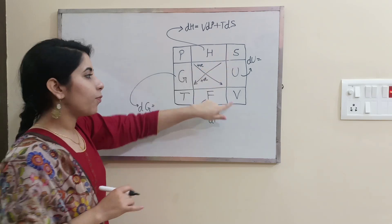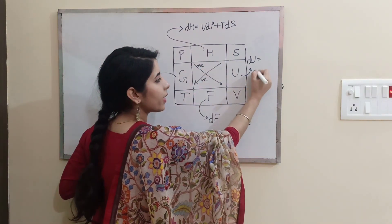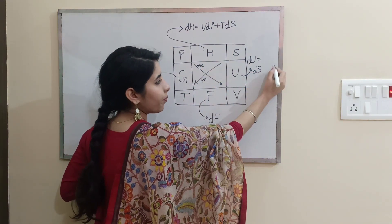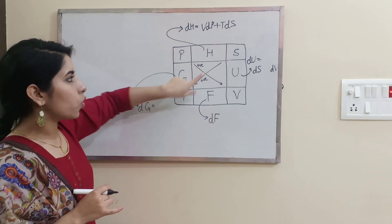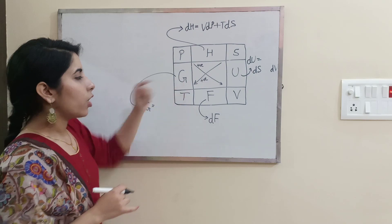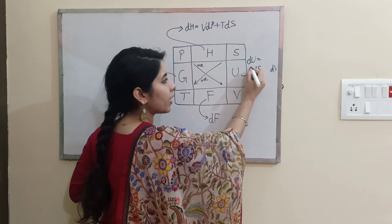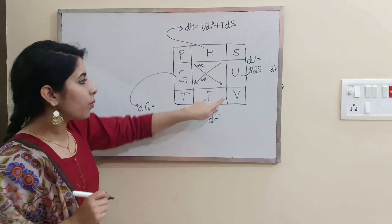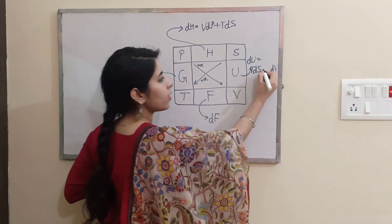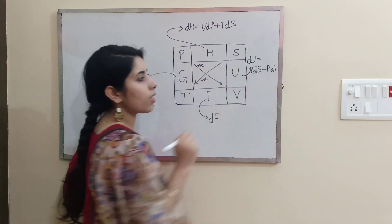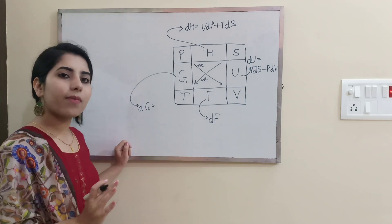For du, what are the neighbors? S and v, so you can write ds dv. Next, I'll move diagonally so it's going to be s to t - you can write positive tds. And you are moving from dv to p, opposite direction, minus. This is how you can quickly write it.